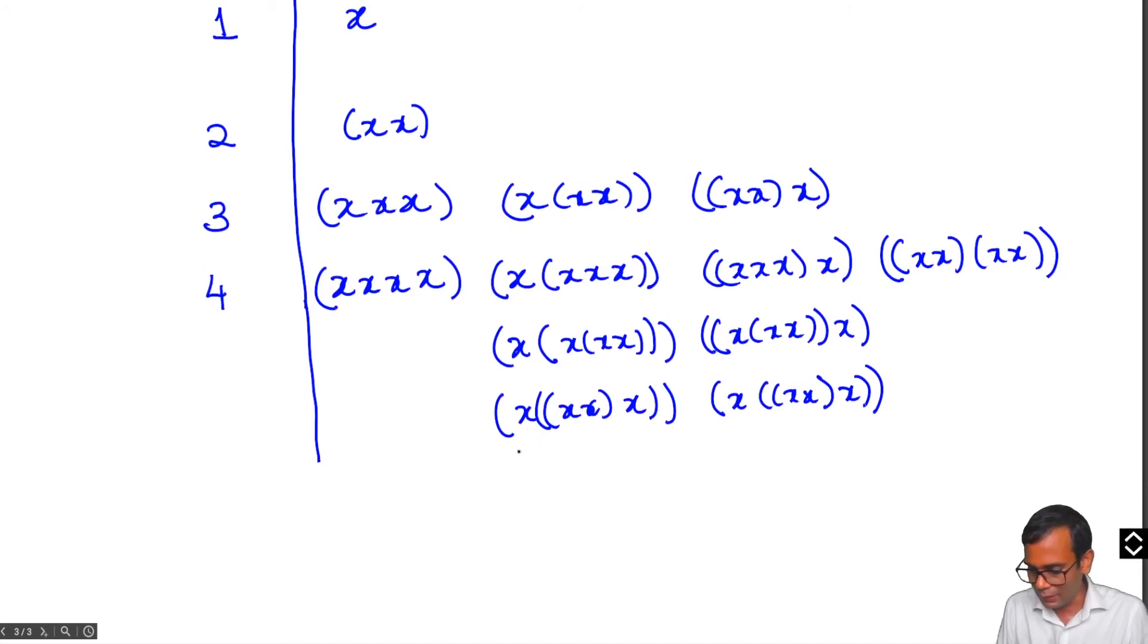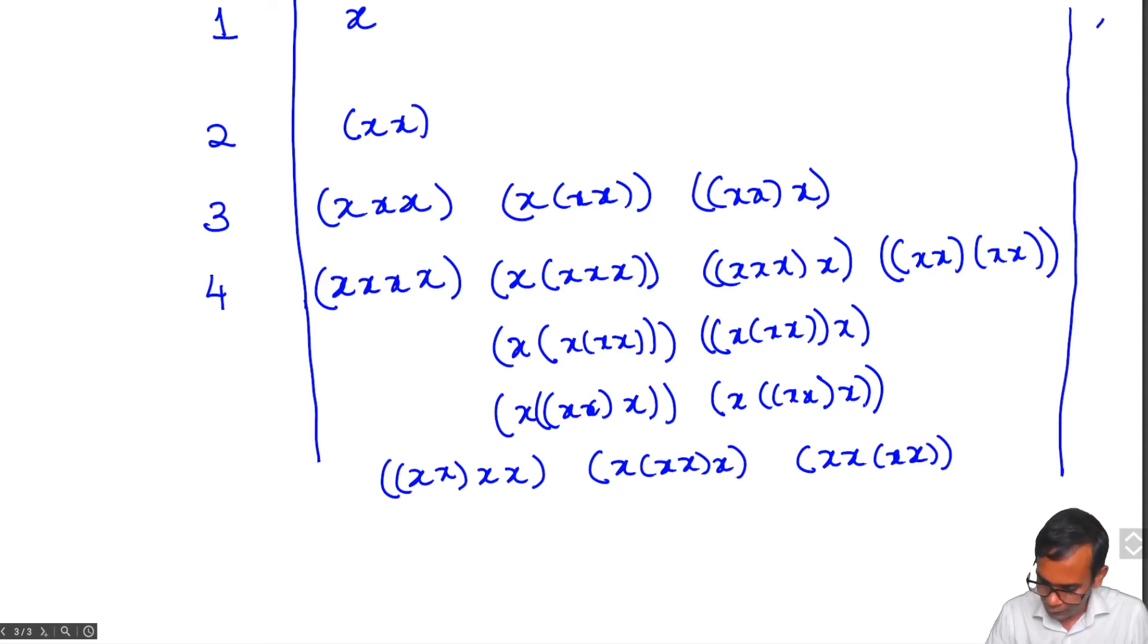That leaves us with the case where we have 1 of size 2 and 2 of size 1. The only question is where they appear. That gives us 3 more. So we have 1, 2, 3, 4, 5, 6, 7, 8, 9, 10, 11, and that is it. The sequence is 1, 1, 3, and 11.